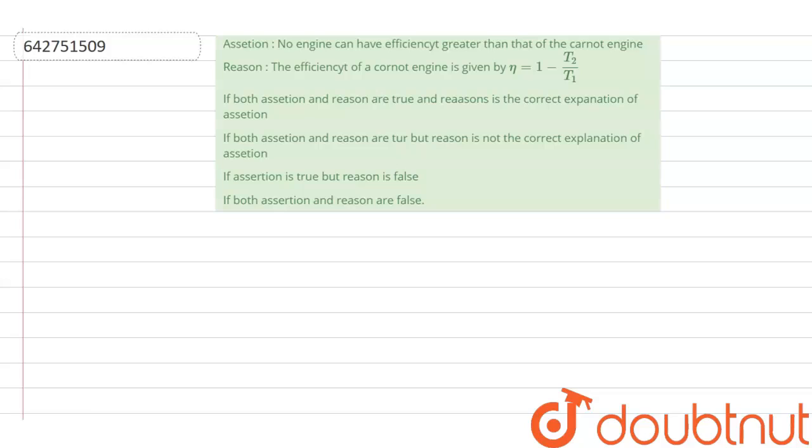Hello everyone, let's start the question. The question has an assertion and reasoning. Assertion says that no engine can have efficiency greater than that of Carnot engine. And reason says that efficiency of Carnot engine is given by eta is equal to 1 minus T2 by T1.